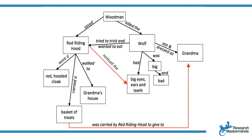Let us look at an example of a concept map which shows the concepts as well as the relationships between them. You can find more examples on the Research Masterminds website — find a link in the description box below. Here you can see the central concept of Little Red Riding Hood and her relationship to the wolf, where Grandma fits in, as well as the other concepts in the story. You can see how the different concepts are all related to one another, and these relationships are shown through arrows.